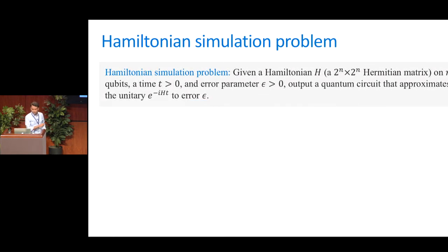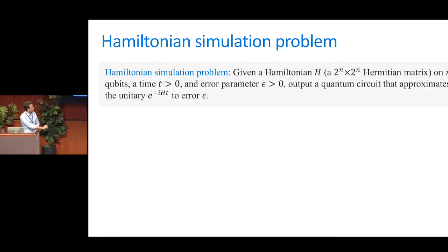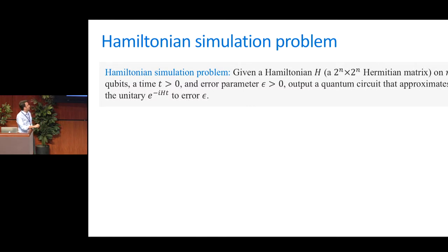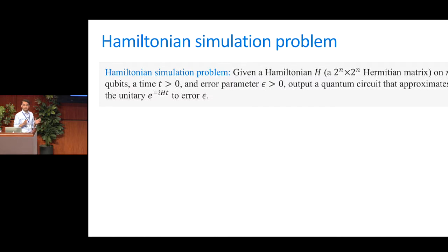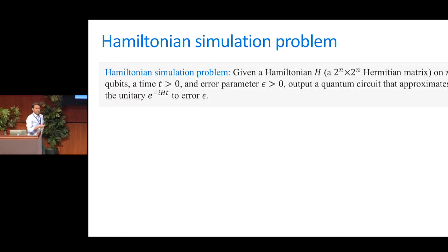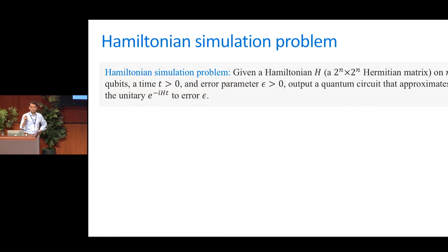The quantum version — the Hamiltonian simulation problem — is very abstractly: you're given a Hamiltonian H, which is just a 2^n by 2^n Hermitian matrix, where n is the number of qubits in your system. You're given a time parameter and some error parameter epsilon, so you don't have to get the answer exactly right — it's okay if you're off by epsilon. And you have to find a quantum circuit that implements the operator e^{-iHt}. This operator describes the time evolution due to the Hamiltonian H, so if your starting state is |ψ⟩, after time t, the state will be transformed to e^{-iHt}|ψ⟩.